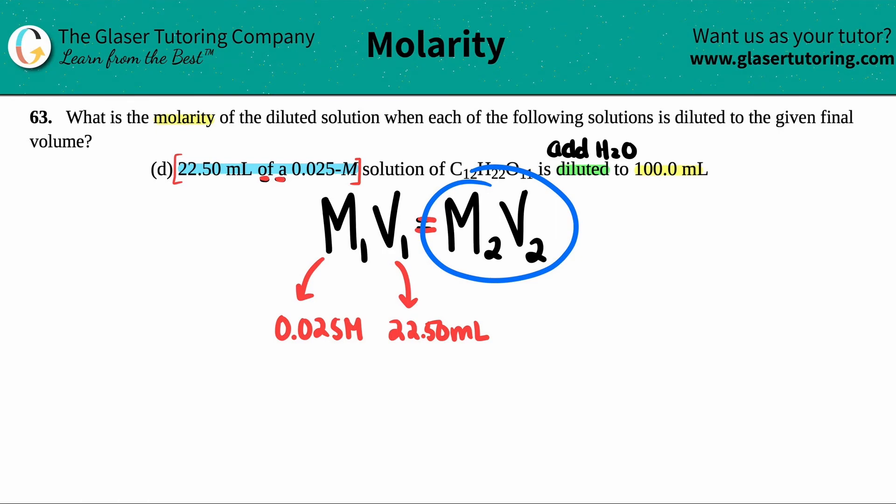Now let's find out the right side. I need a molarity and a volume. It's diluted to 100 milliliters, so this volume is 100 mL. What's the molarity? That was the question, right? What is the molarity? So I'm solving for this. I don't know what that is.